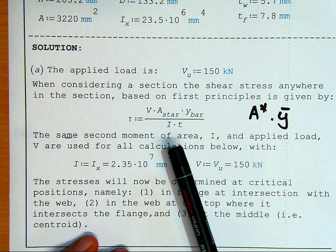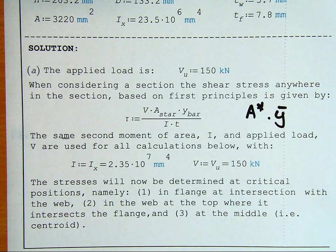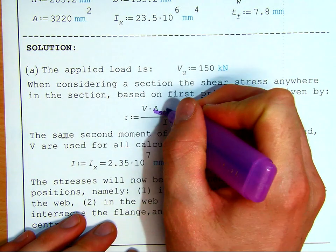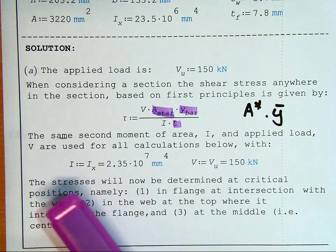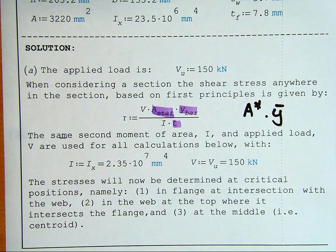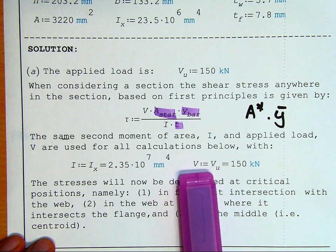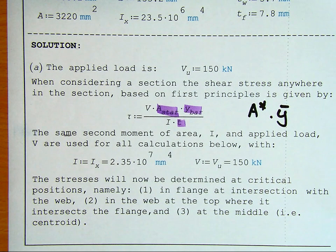However, when doing this, we must remember that the I is the second moment of the entire section, whereas the T is per section we consider. So, when we run through this, three terms will change depending on where we're looking. The second moment of area I and the applied load V are used for all calculations below with I equals, and this is the IX of our strong axis, and then our V, the applied load, is simply our ultimate load, which we've been given.